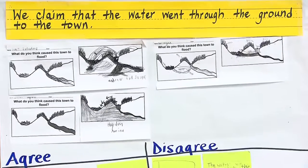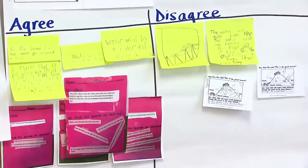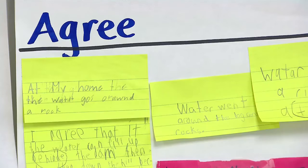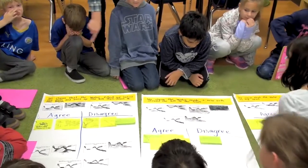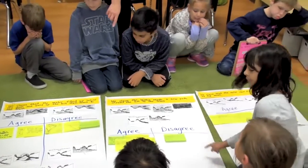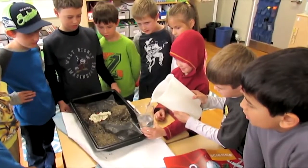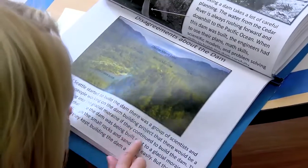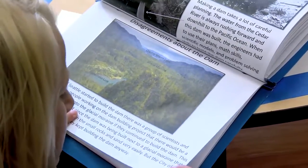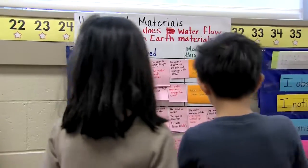We use the claim T-charts to collect evidence, thinking about whether the evidence proves or disproves that claim. Then as students built their knowledge, they started using other pieces of evidence from experiments they'd done, the videos they were watching, and the texts they were reading. Building that over time, students became more confident in their science ideas. Some students changed their science ideas because of those experiences.